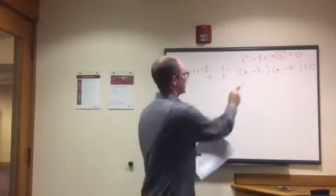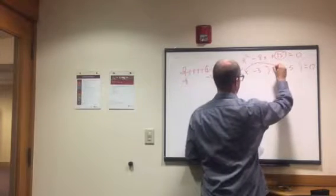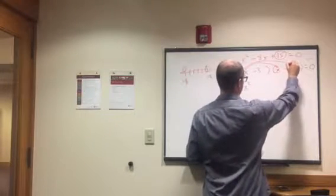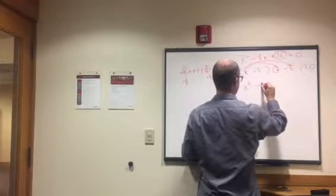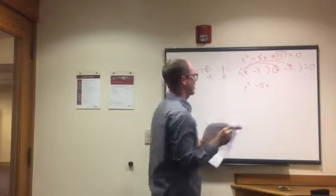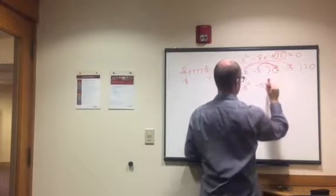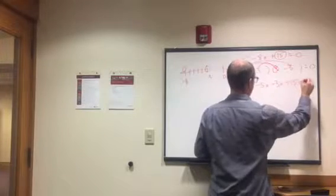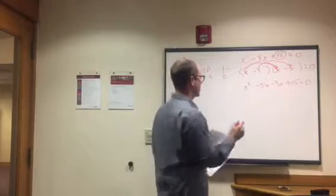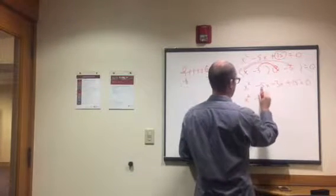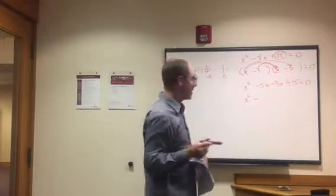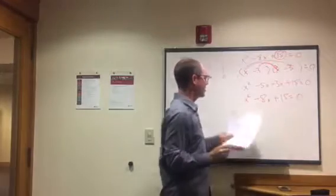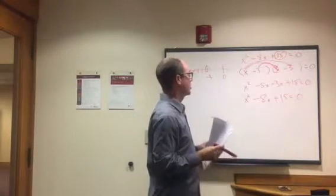Here's our factored form. Let's distribute it out to make sure it works. x times x gives x squared. x times negative 5 gives negative 5x. Negative 3 times x gives negative 3x. Negative 3 times negative 5 gives positive 15, equals zero. Now combine like terms: x squared, then negative 5x minus 3x gives negative 8x, plus 15 equals zero. That works — it matches our original equation.